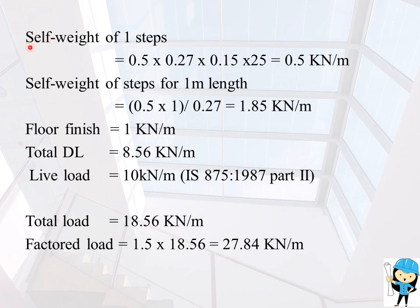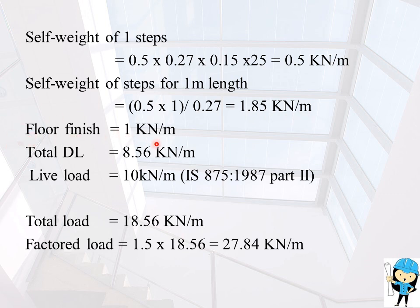Self weight of one step is 0.5 into 0.27 into 0.15 into unit weight of concrete, giving 0.5 kN per meter. Self weight of step for 1 meter length equals 0.5 into 1 divided by thread dimension, giving 1.85 kN per meter. Floor finish is taken as 1 kN per meter. Adding all these loads, total dead load equals 8.56 kN per meter.